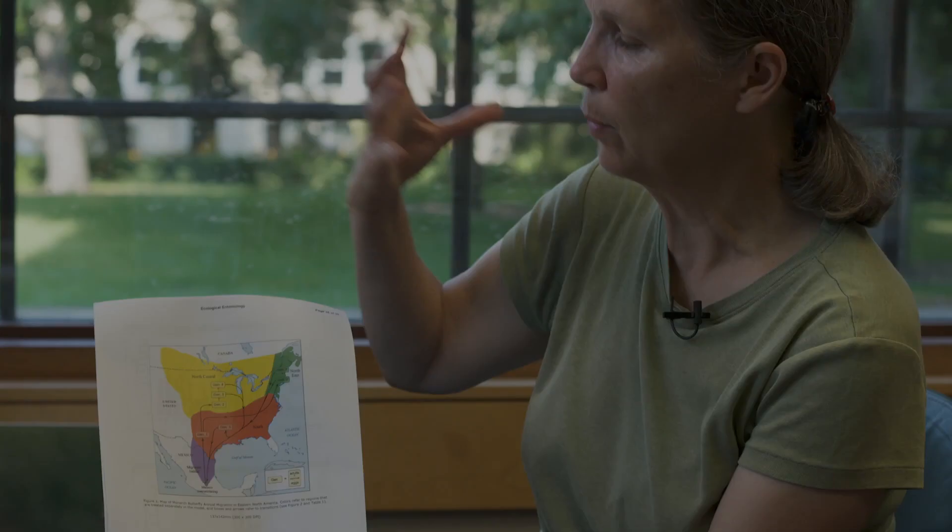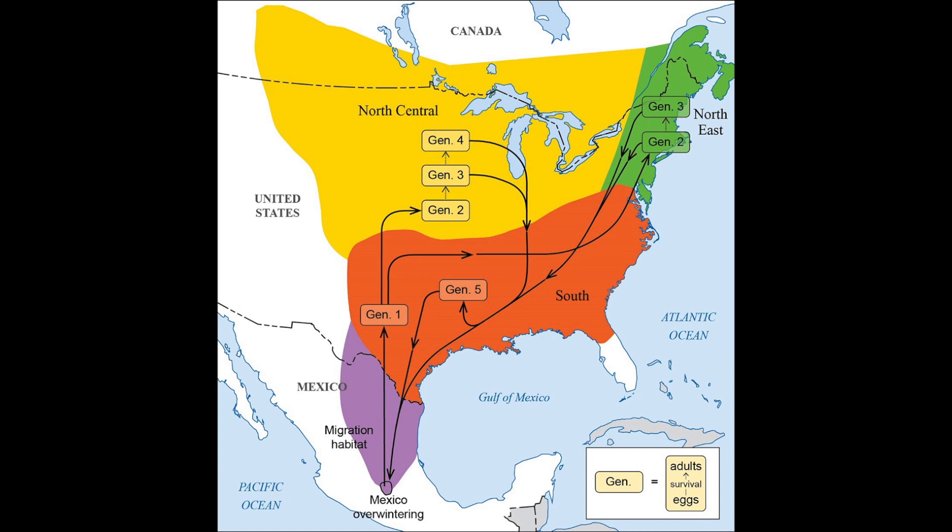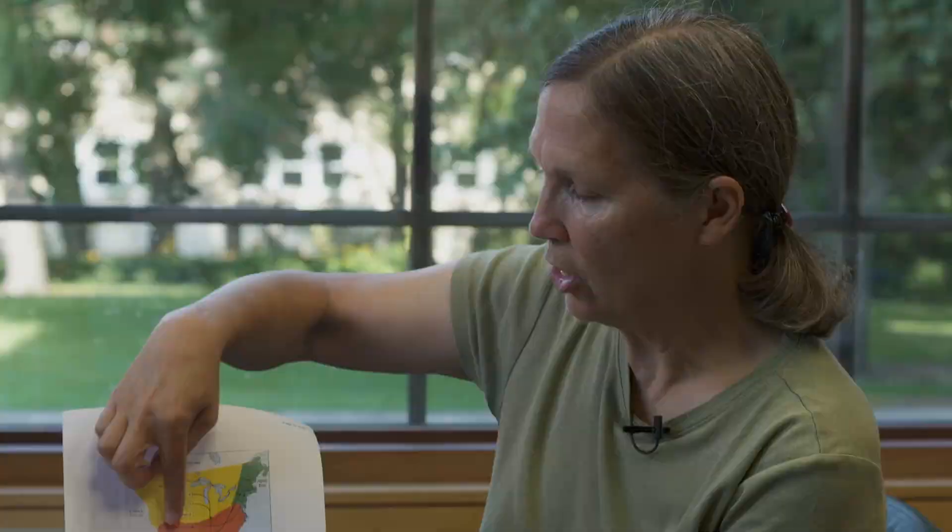What we've done with this model is thought about how we can simplify the movement of monarchs through their whole range. We literally sat down with a map and put arrows on it, and each one of those arrows represents a transition. For example, this arrow represents monarchs moving from Mexico into the southern United States where they'll breed. We can put numbers on these arrows and say what percentage of them survive. Each arrow basically represents our simplification of weather conditions, predators, and many other things going on.